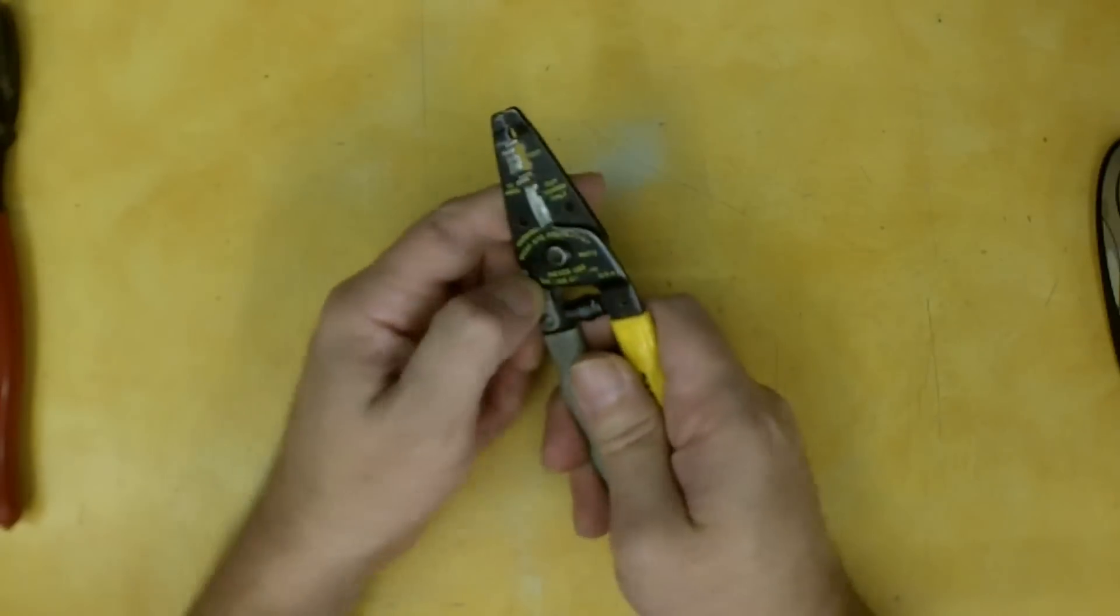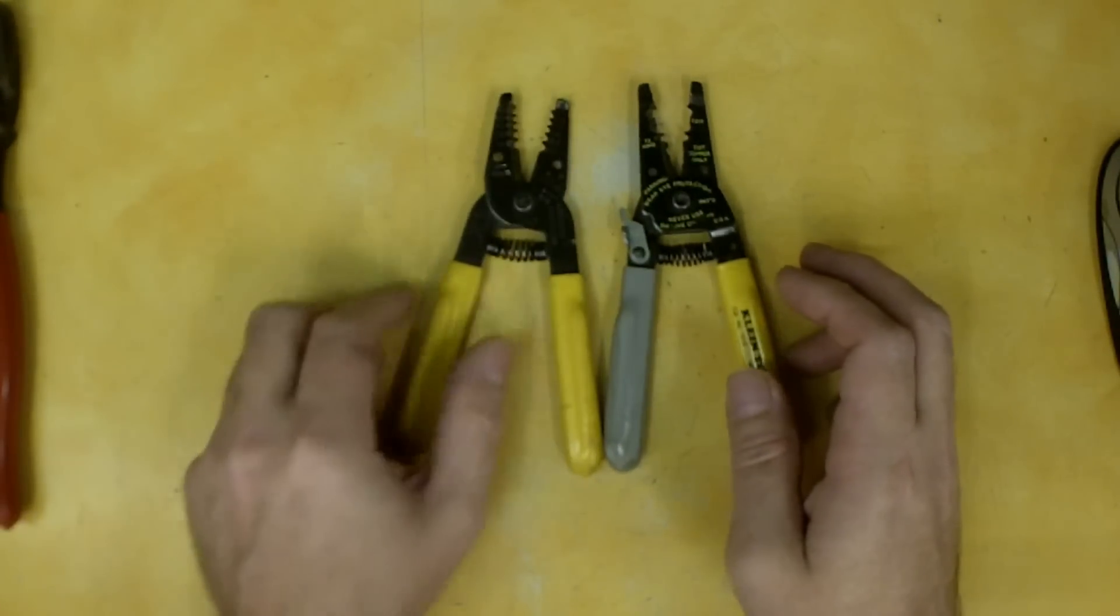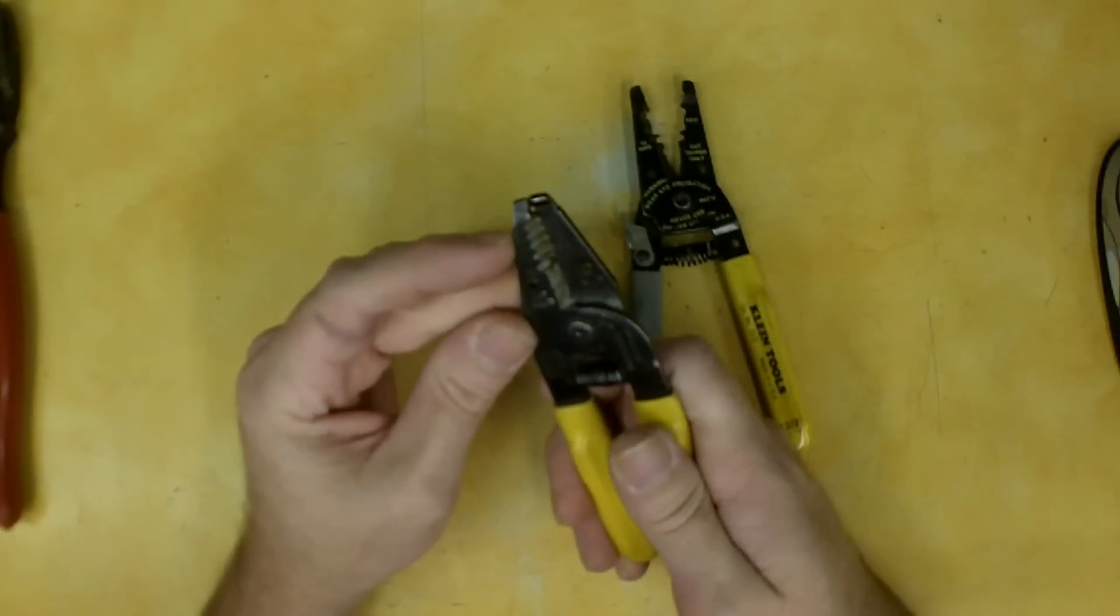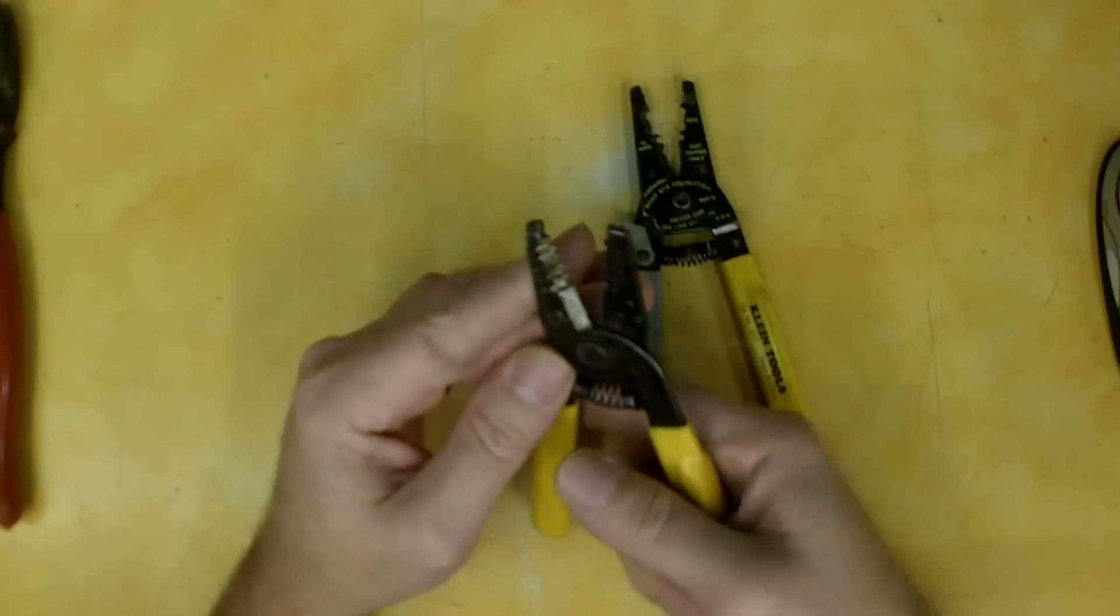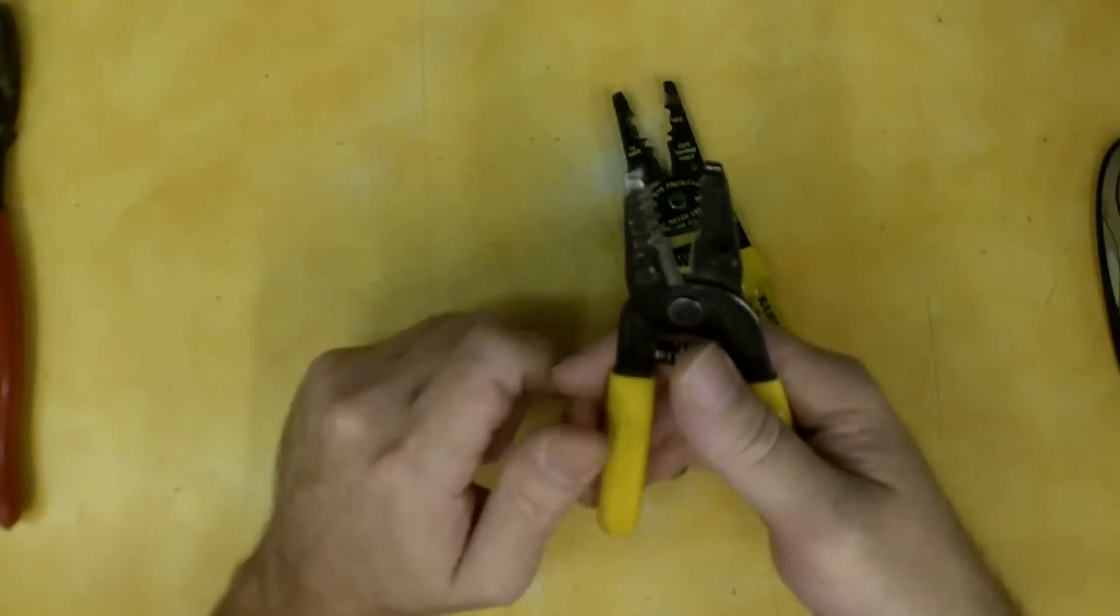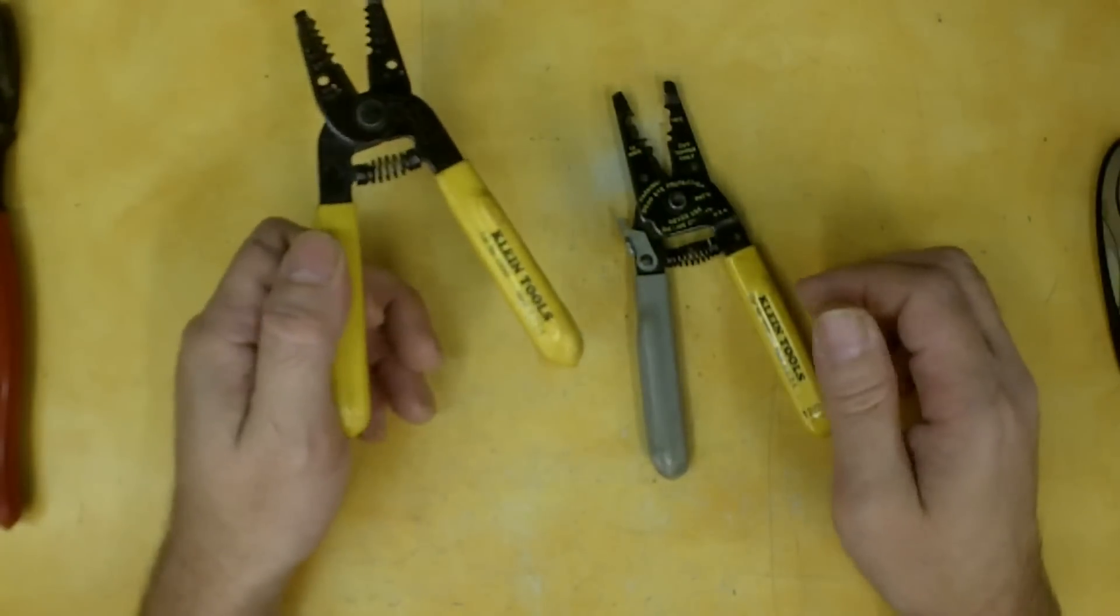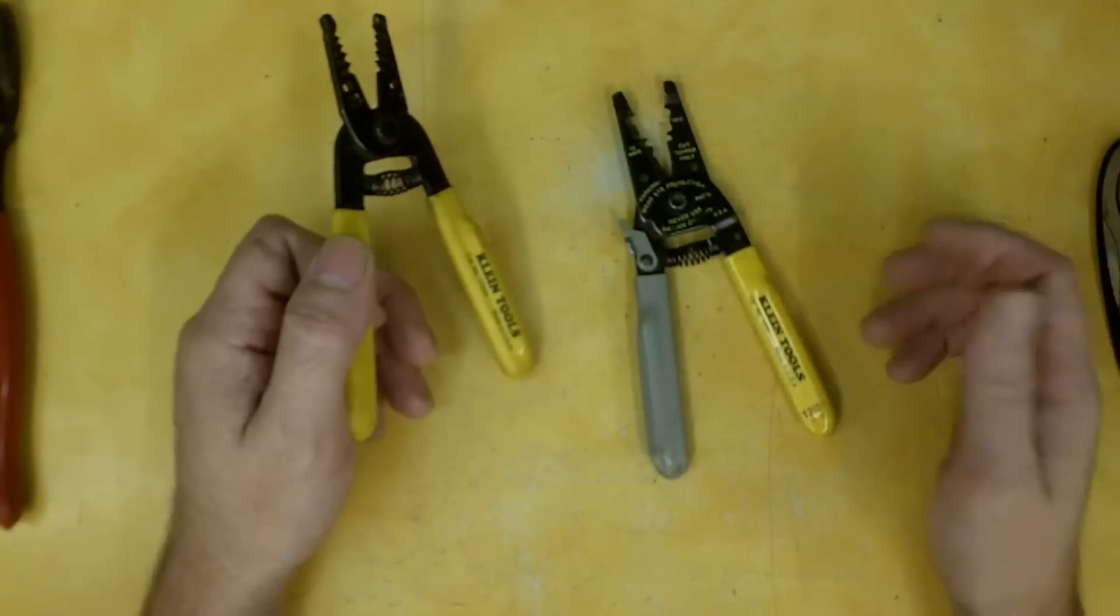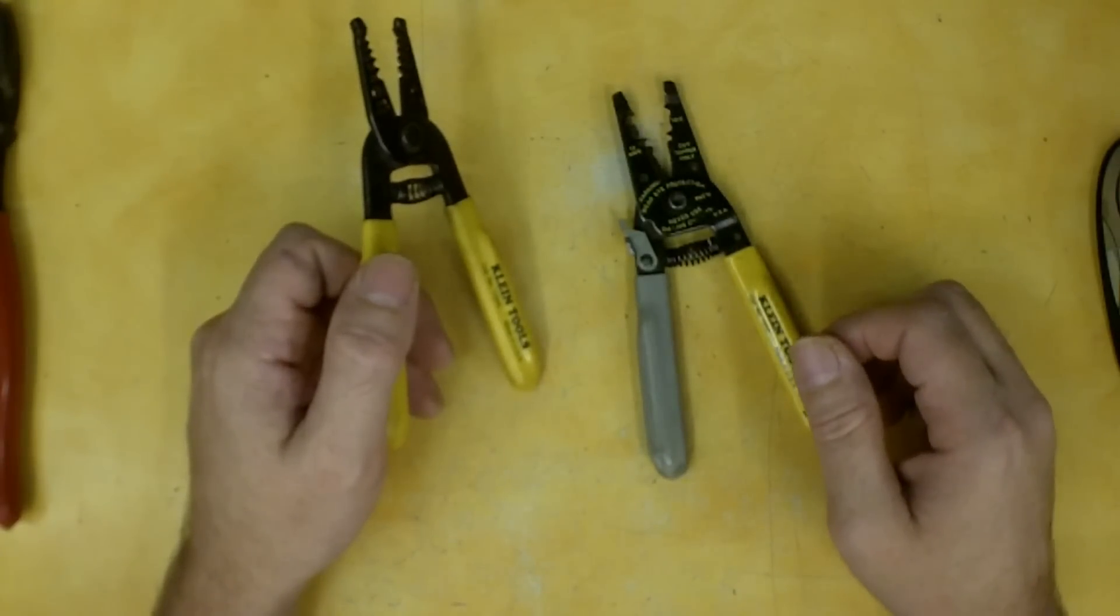A couple of strippers here. I have two different sets of strippers. This is your standard one that has all the gauges, 10 to 18 on it. And you pick your hole and you can strip your wire. Most of the time, these days anyway, I'm just working with 12-2 Romex. Some of this language may be foreign to a lot of people watching this but some may not.